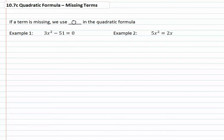For example, in example one, we have our a, we do not have an x term, which means we have a zero for our b, and we have negative 51 for our c.